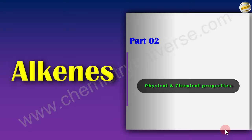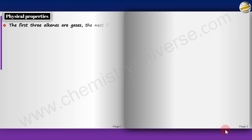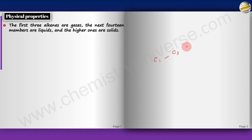This is Alkenes part 2: physical and chemical properties. Let us start with the physical properties. Now these are the things that you have to remember. The first 3 Alkenes are gases, the next 14 are liquids and the higher ones are solids.